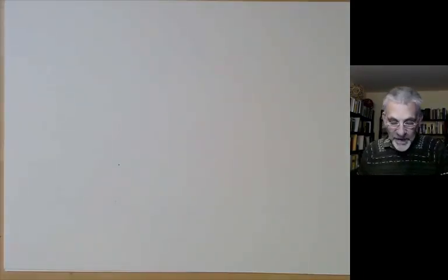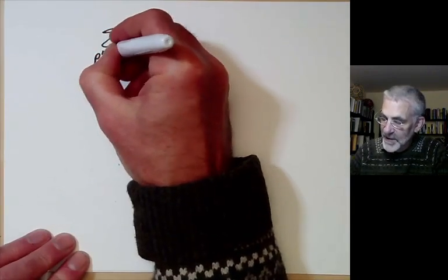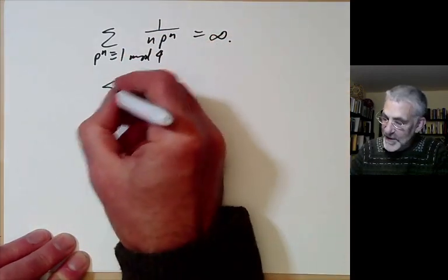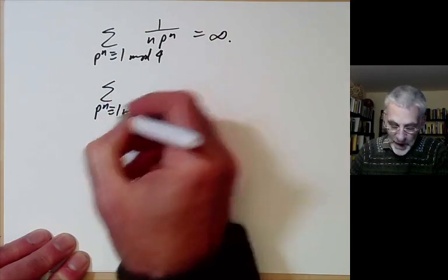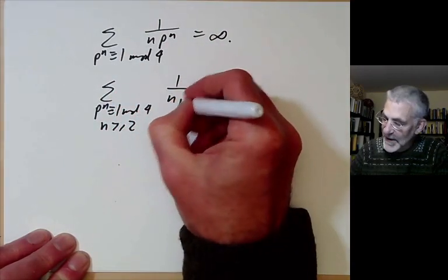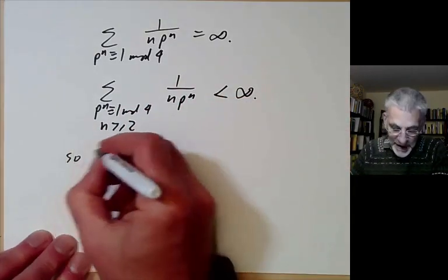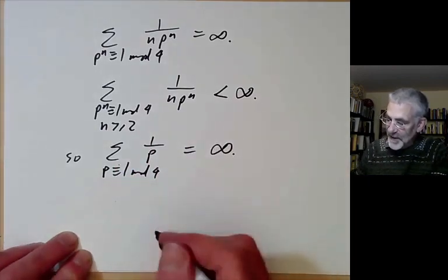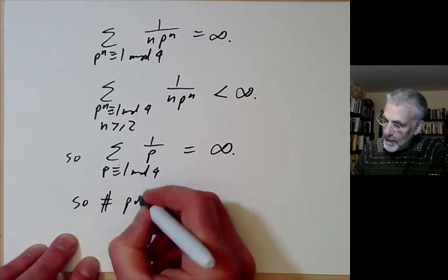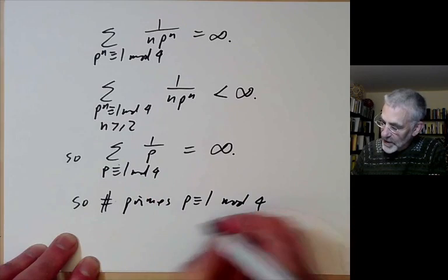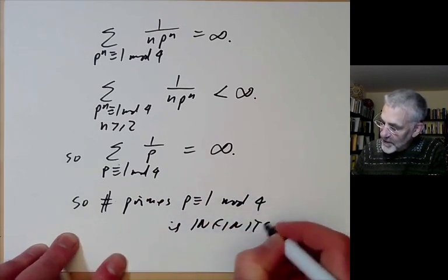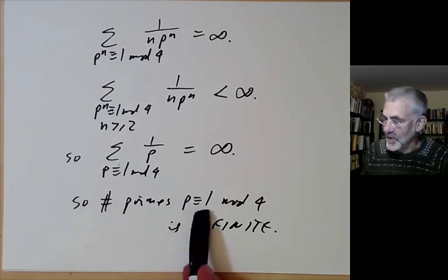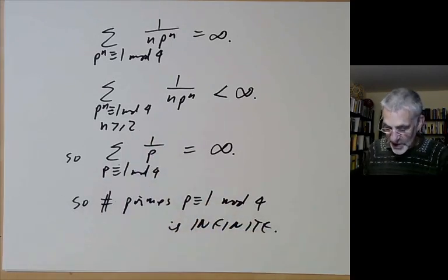Now we can complete the proof. The sum over prime powers p^n ≡ 1 mod 4 with n = 1 is infinite, and the sum over p^n ≡ 1 mod 4 with n ≥ 2 is finite. So the sum over all primes p ≡ 1 mod 4 of 1/p must be infinite, which means the number of primes p ≡ 1 mod 4 is infinite. In fact, we've proved something stronger: not only are there infinitely many such primes, but the sum of their reciprocals also diverges.